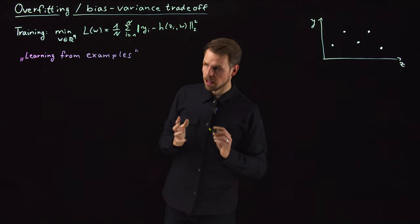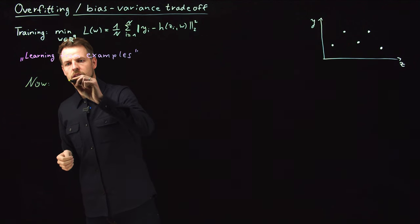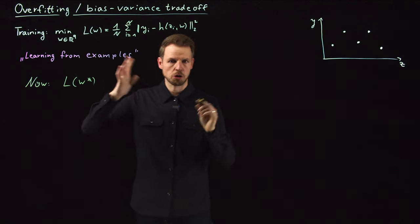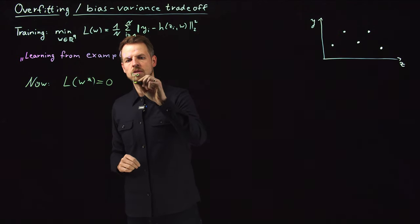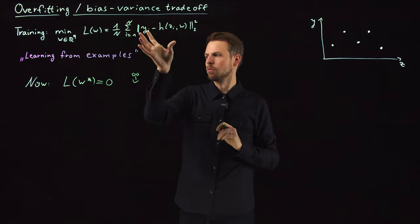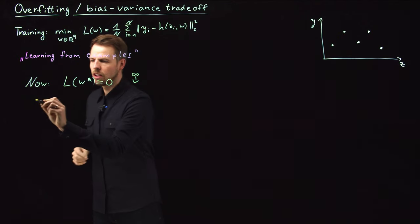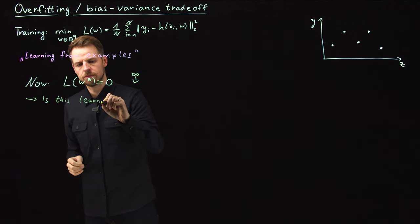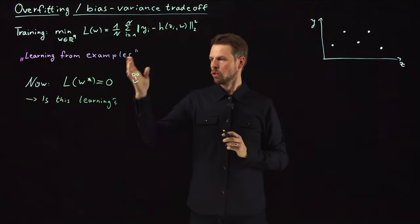Now let's make a thought experiment and say that the loss function, given an optimal parameter value W*, so we have solved our optimization problem using gradient descent, let's say, that this is actually zero. So we're obviously very happy. This is the best thing that can happen - this is a non-negative function, so zero is obviously the best, no loss. So the question is now, is this really learning? One could say, okay, I've minimized my loss, so clearly I've learned something.